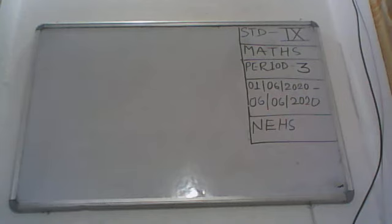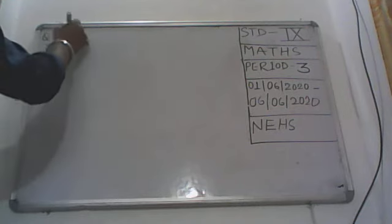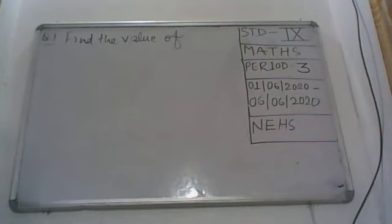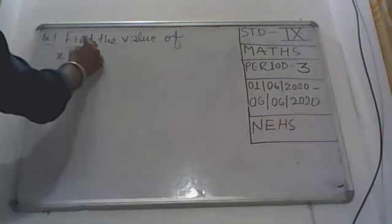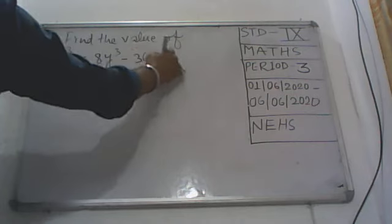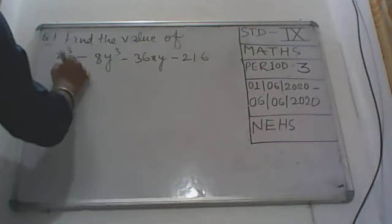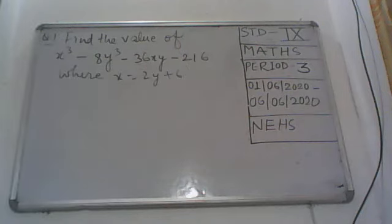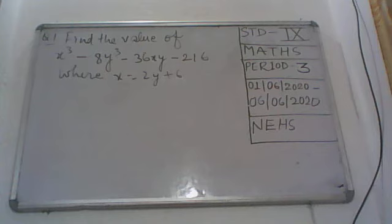Now suppose we have come here with some different formula. Suppose it has been saying: find the value of x cube minus 8y cube minus 36xy minus 216, where x is equal to 2y plus 6. Now we know that this is based on that formula. Because we are having here 3 cubical terms — x cube, then 8y cube is also a cubical term, and 216. We have to arrange them in order.